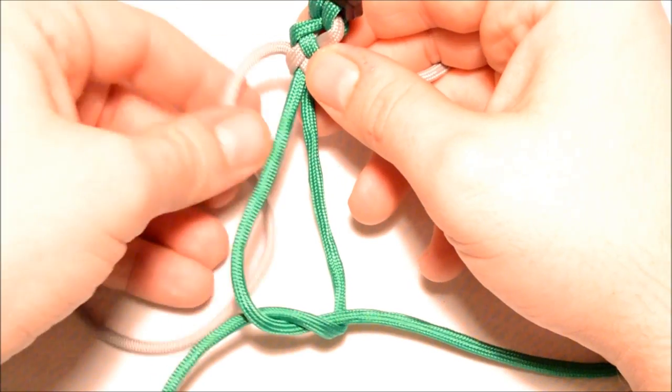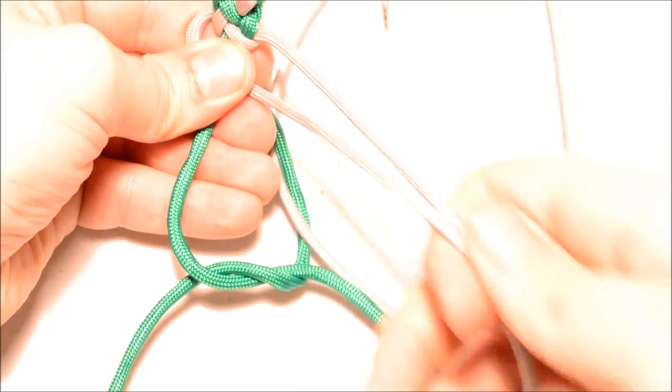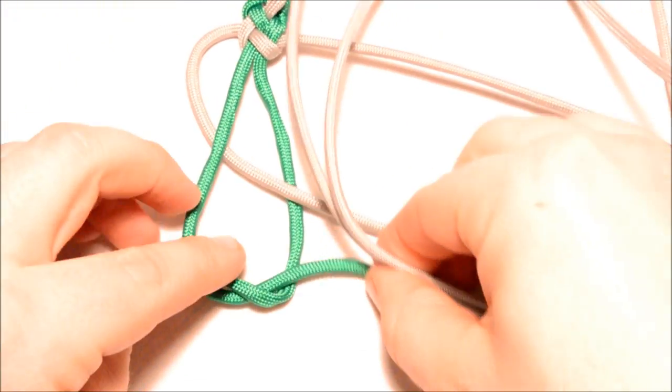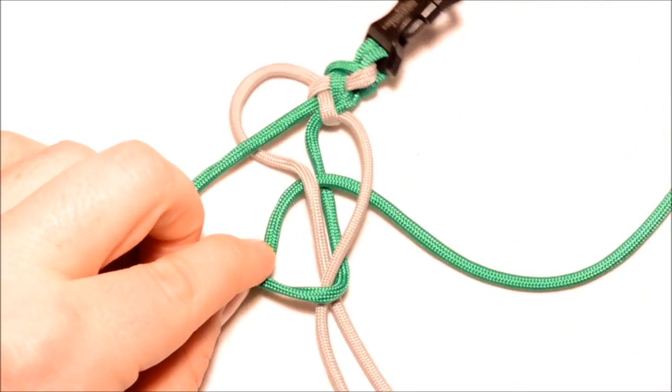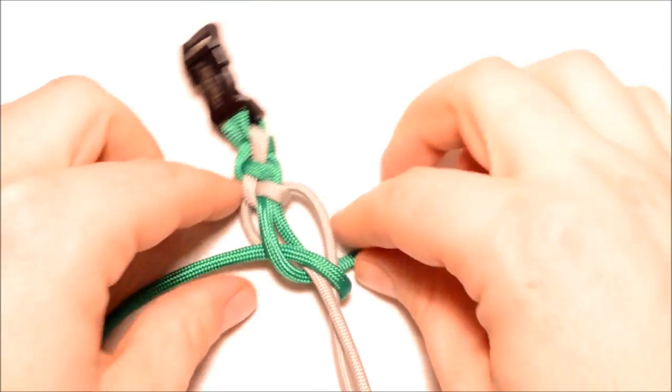Bring the left side through the middle. Combine it with the other cord, so just put them both together. Open this loop up. Pass it down through that loop. And then we can pull this tight.